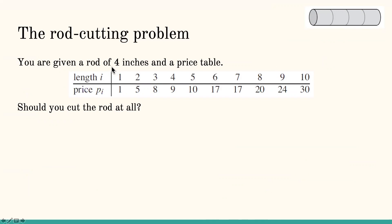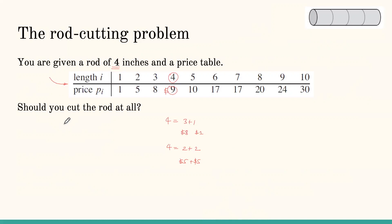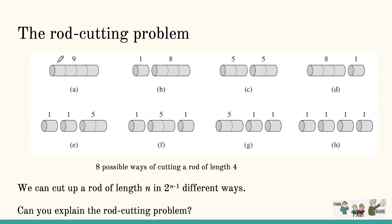For example, given a rod of four inches and a price table, should we cut the rod at all? If so, how many pieces and where? The price for a rod of length four is nine dollars. If we cut it into three plus one, we get eight plus one dollars — same as nine. If we cut it into two plus two, we get five plus five, which is ten dollars. So the answer for a rod of length four is two plus two, giving revenue of ten dollars.